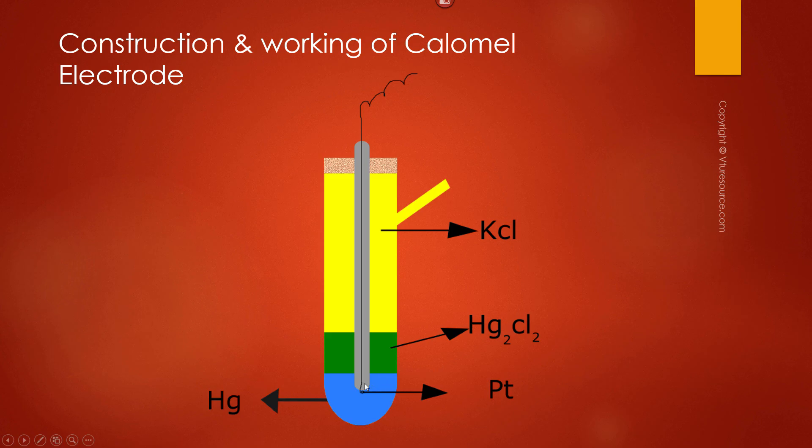At the bottom of the glass tube where mercury is placed, a platinum metal is dipped. It is connected with a copper wire for external connection. Through the side tube, KCl solution of known concentration is introduced.